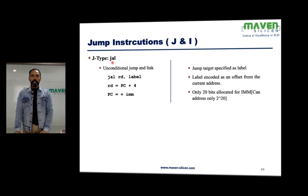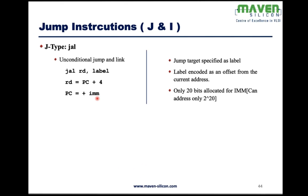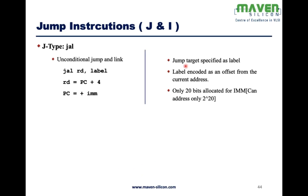JAL is a J-type instruction that performs an unconditional jump and link. The format is: JAL destination_register, offset. The destination register will hold the next instruction address, PC plus 4. At the same time, the jump is performed as PC equals PC plus immediate value. The jump target is specified as a label, which is encoded as an offset from the current address — it's always relative.